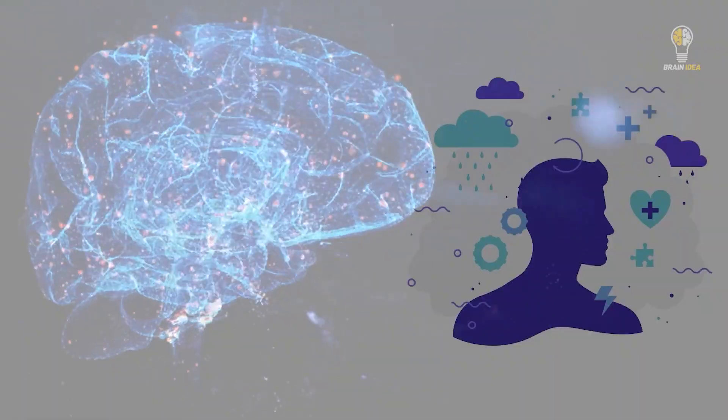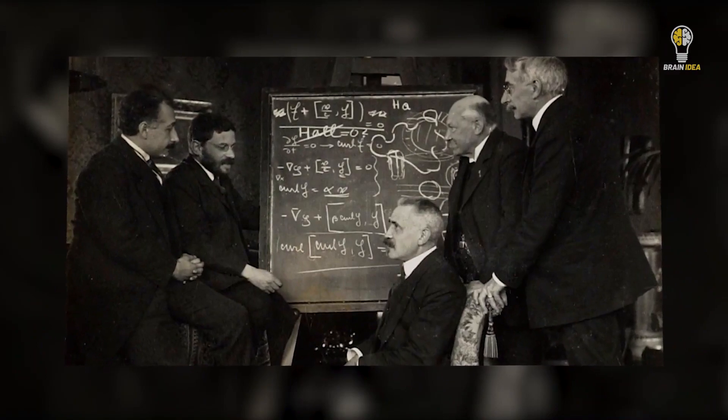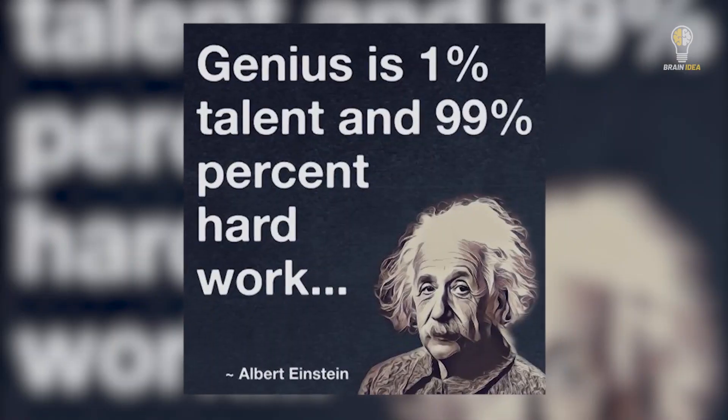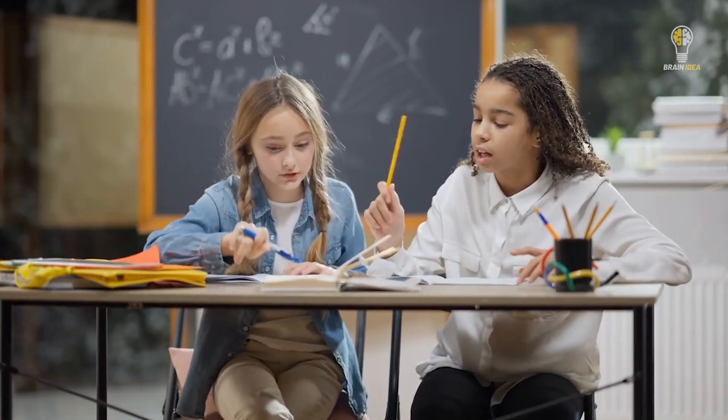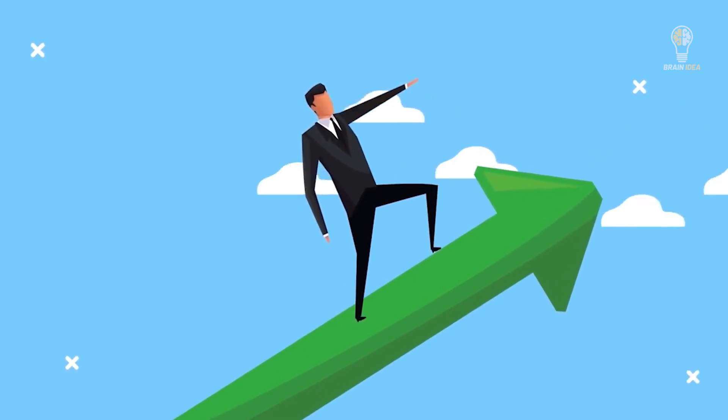Einstein's ordinary brain reminds us that brilliance knows no fixed mental template. What made Einstein such a wonderful scientist was his curiosity, hard work, and persistence. These are qualities we can all develop to make breakthroughs in our fields and be like Einstein. Just as no two geniuses have identical brains, no two individuals possess the same path to success.